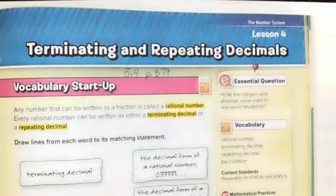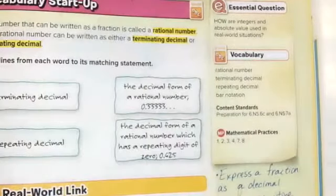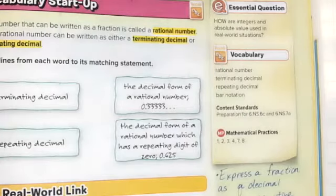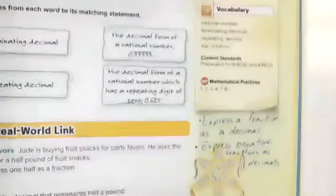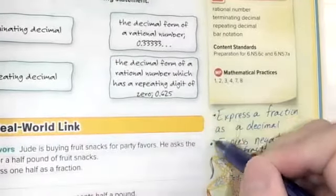Today we're working in Chapter 5, Lesson 4, page 379, Terminating and Repeating Decimals. The learning targets today are that we will be able to express a fraction as a decimal — both terminating and repeating decimals — and then we will be able to express negative fractions as decimals as well. So those are our learning targets for today.